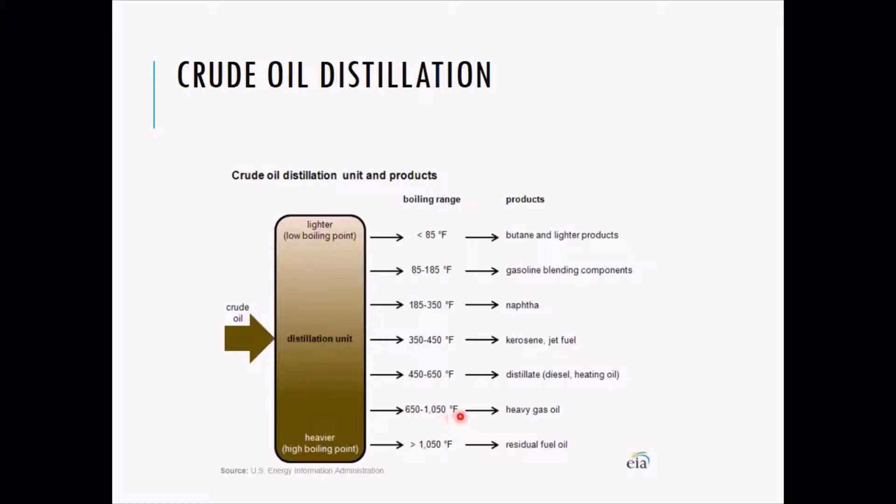At 650 to 1050 Fahrenheit you get heavy gas oil, and above 1050 it is called residual fuel oil. This is the black thickly viscous liquid which is then converted into bitumen or that kind of stuff in order to use it for laying the roads.